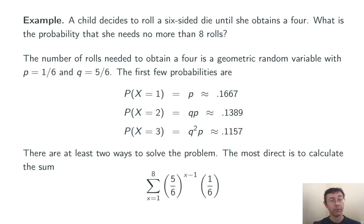All right, let's actually do this problem. There are at least two ways to do it. The most direct is just to take the probability that it takes her one roll, two rolls, three rolls, and so on, all the way up to eight rolls. Find them individually and add them all up.